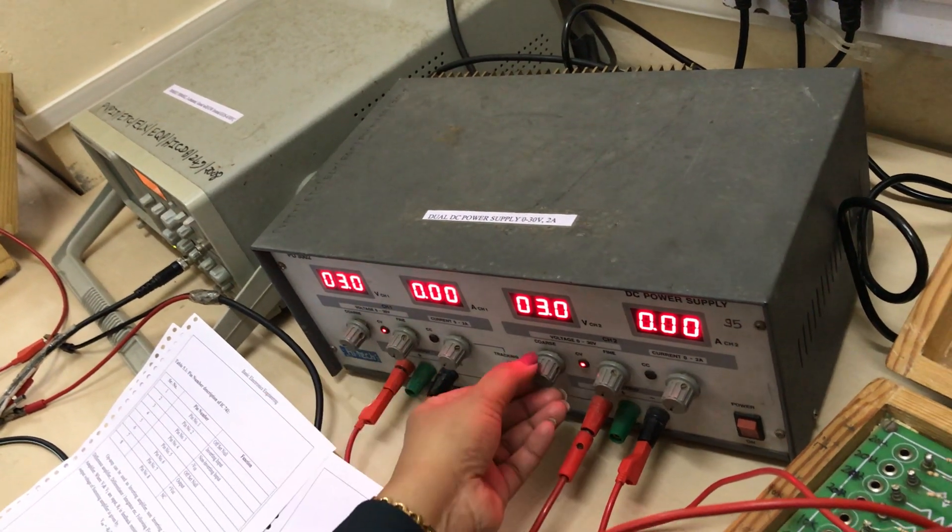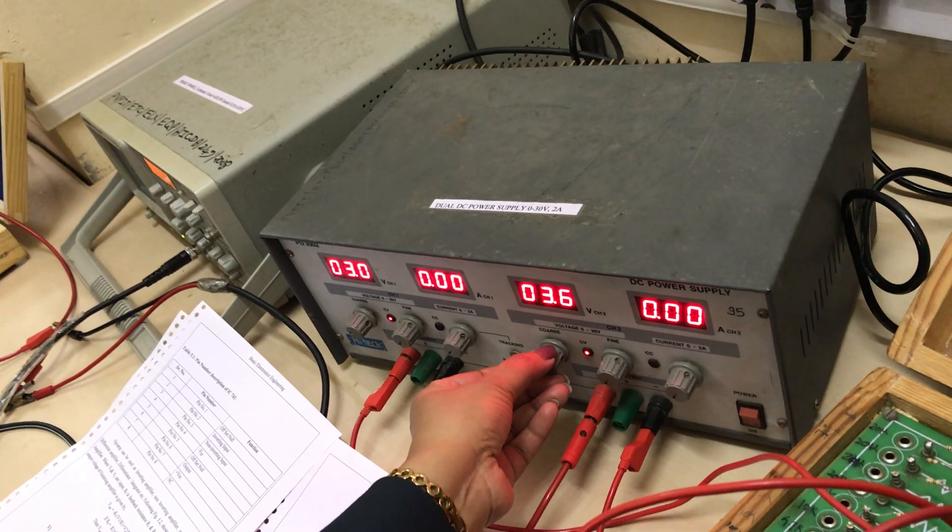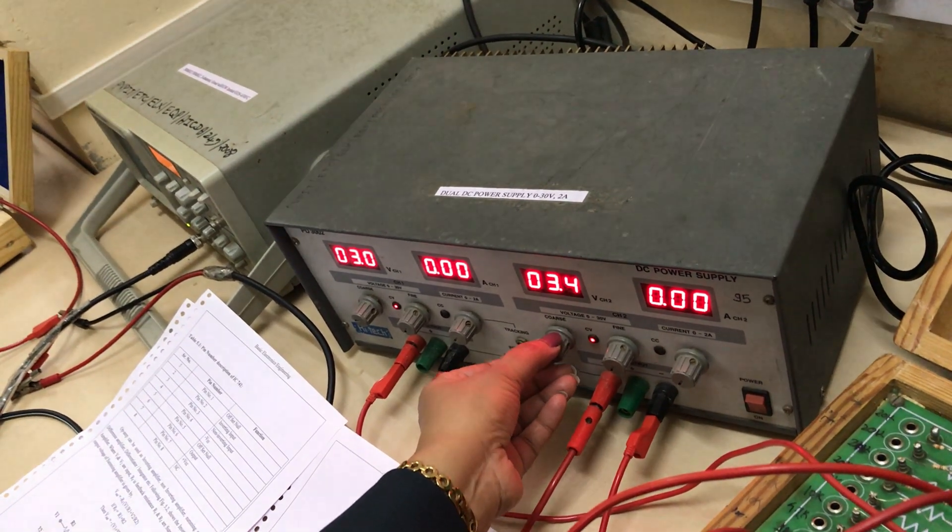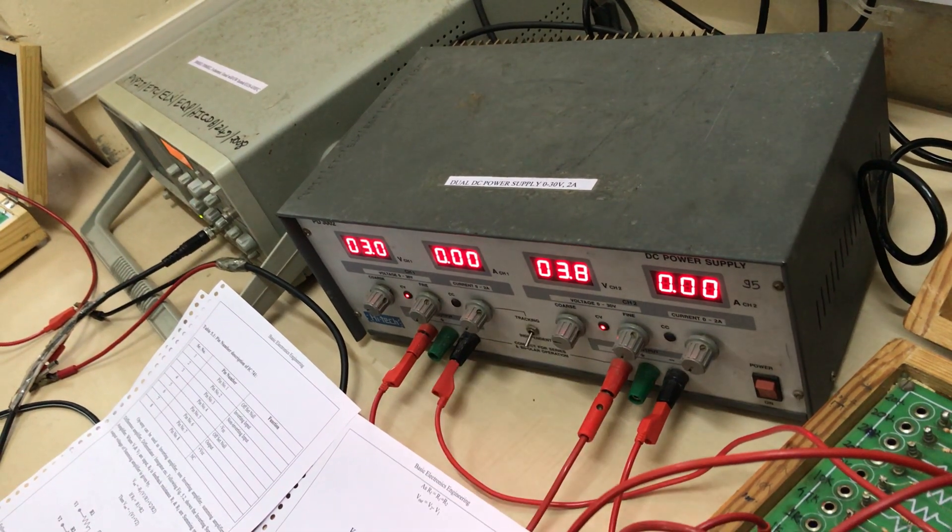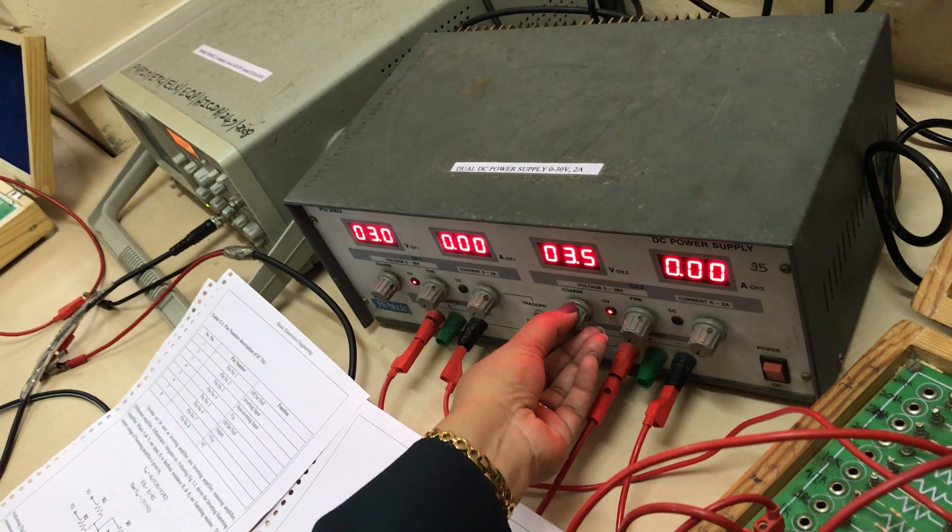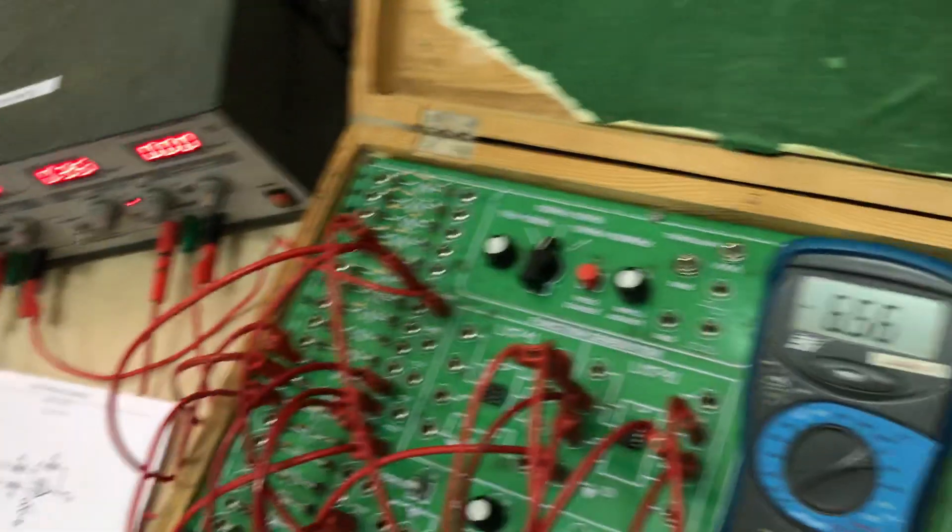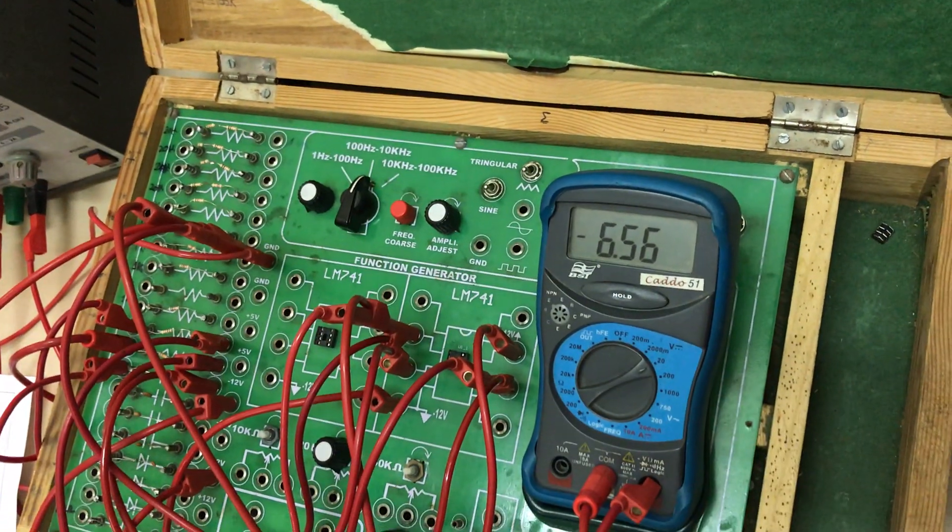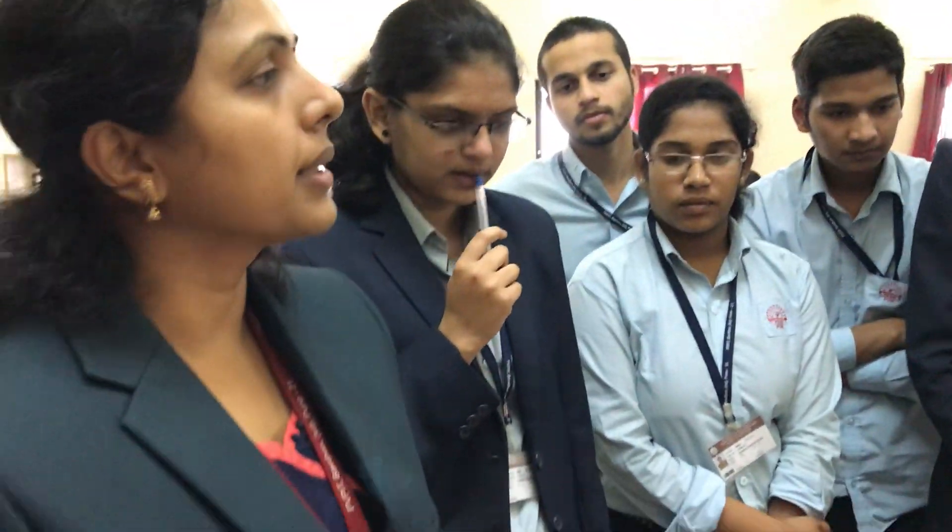It is around 3 volts, I will change this also for 4. It is 3.5, 3 and 3.5 are the two inputs and answer is minus 6.56. Theoretically it is 6.5 and we are getting practically 6.56.